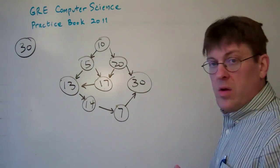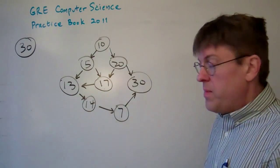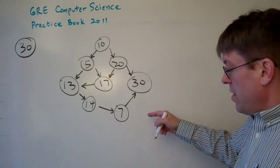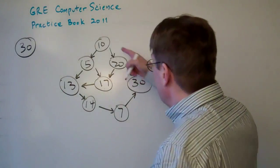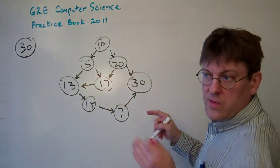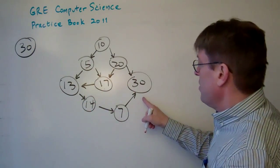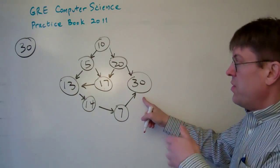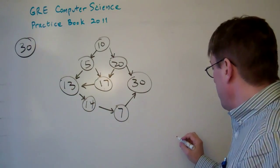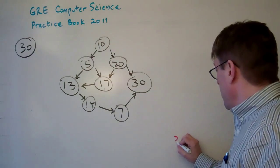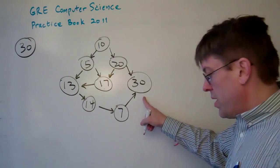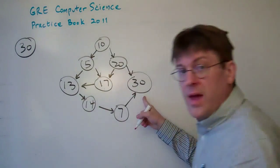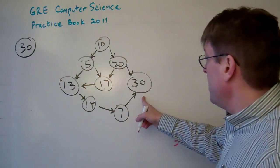I like to start from the end and move my way back to the beginning. We can see visually here that 10 is the first one in the chain because there's no arrows going into 10, and 30 is the last one in the chain. Let's just say 30 comes at the end — we know that. Only three of the answers include 30, so that kind of eliminates some things right there.